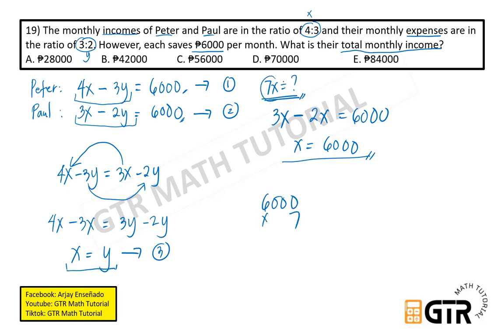Total monthly income is 6,000 times 7. It's just 7x. Therefore, we have 7 times 6 is 42. Just copy the three zeros. 42,000 is their total monthly income, which is letter B.